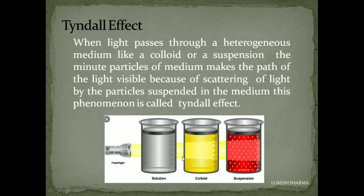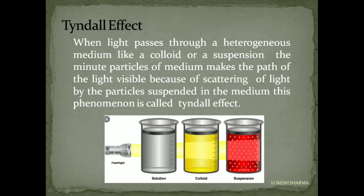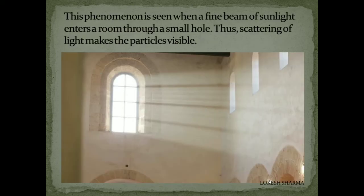In Class 9 in the chapter 'Is Matter Around Us Pure', we learned about three types of mixtures: solution, colloid, and suspension. In a solution, the particle size is too small to be seen even by microscope. In a colloid, particles cannot be seen with the naked eye but can be seen with a microscope. In a suspension, the particles can be seen with the naked eye. When a beam of light passes through these, a solution does not make the path of light visible, but colloid and suspension do — this phenomenon is called the Tyndall effect.